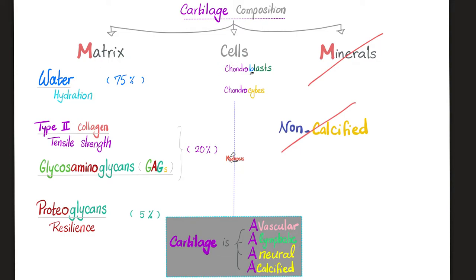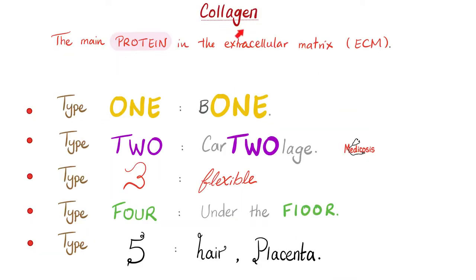The matrix contains water for hydration, type 2 collagen, glycosaminoglycans, and proteoglycans. Let's review the different types of collagen: type 1 is in bone, and type 2 is in cartilage for the most part. The most important collagen types found in cartilage are type 2, type 6, type 9, 10, and 11.